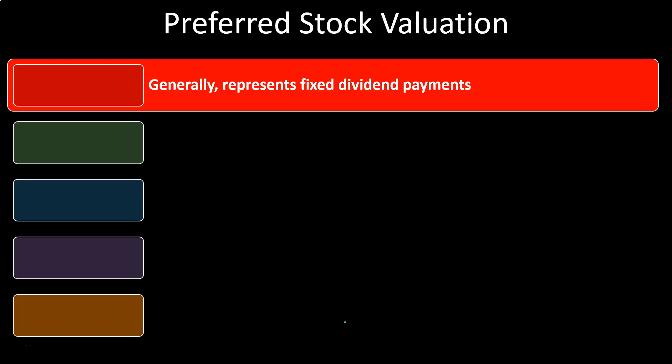Preferred stock does not have the same type of voting rights as common stock, but typically dividends are paid first to the preferred stock. Therefore, the dividends can typically be thought of as more standardized. If we compare and contrast preferred stock to bonds, bonds have a set maturity date and two kinds of cash flows: the interest payments as an annuity and the face amount at maturity. With preferred stock, we think of dividends that go perpetually out into the future.